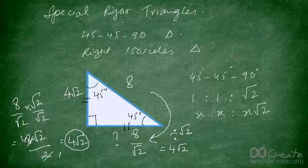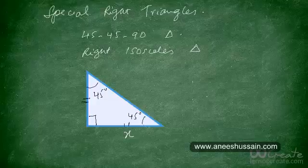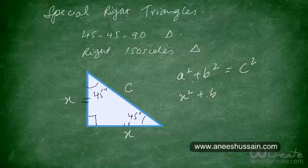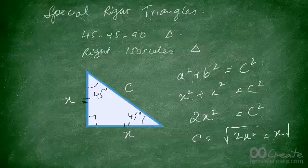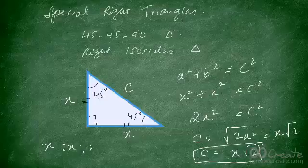If you ever forget the ratio, you can always apply the Pythagorean theorem, since you know both legs have the same length. If the base is x and the height is also x, and we call the hypotenuse c, then a² + b² = c² gives us x² + x² = c², so 2x² = c², therefore c = √(2x²) = x√2. This confirms that the ratio in a 45-45-90 triangle is always x : x : x√2.